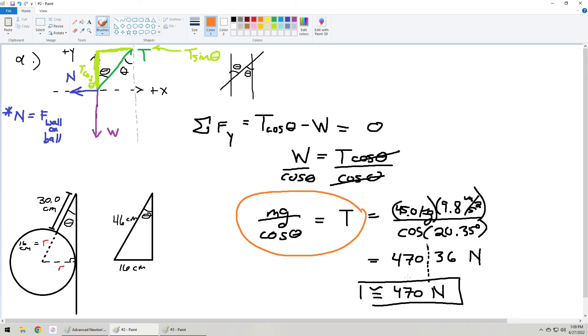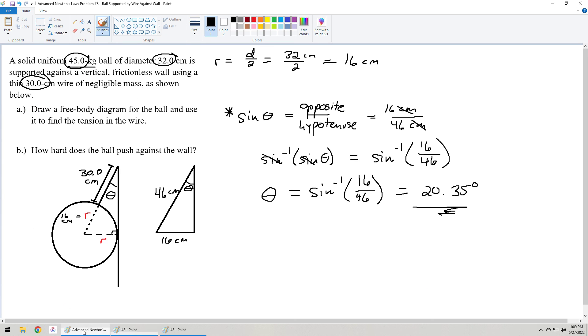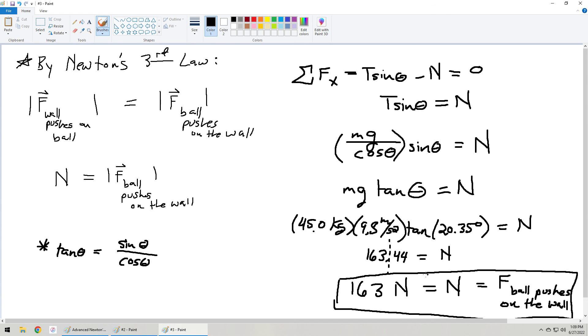So that's it. We have part A being 470 newtons. That's the tension in the wire. And then how hard does the ball push against the wall? Well, it pushes against the wall the same magnitude as the normal force. 163 newtons to the right. And that's it. Thanks for watching.